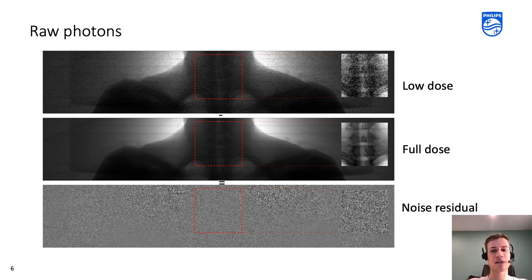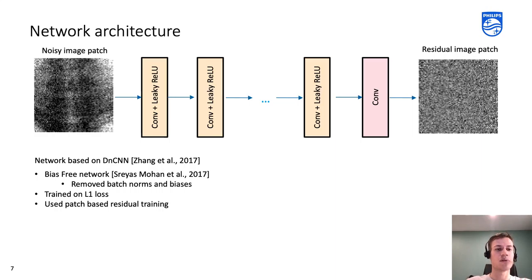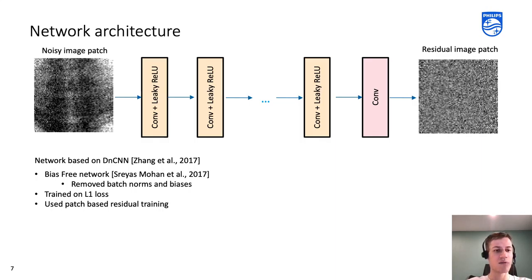Let's have a look at the training data. Here are the line integrals, which are pretty similar to normal-looking X-rays. On the top we show 1% low dose, in the middle full dose, and in the bottom is the noise residual. Raw photon data looks slightly different — it has a higher dynamic range, which is beneficial for denoising because the deviation between signal and noise is more prominent, as you may see in the noise residual.